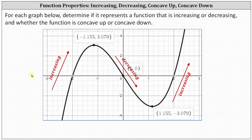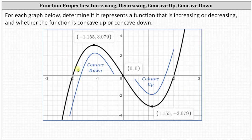Now let's talk about concavity. Analyzing the shape of a graph, if it's in the shape of a downward-facing cup, the function is concave down, as we see here on the left. If the graph is in the shape of an upward-facing cup, as we see here on the right, the graph is concave up.